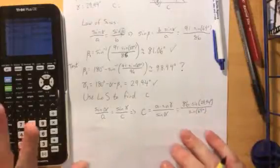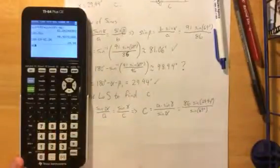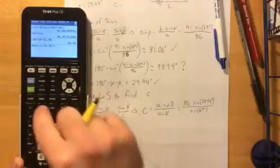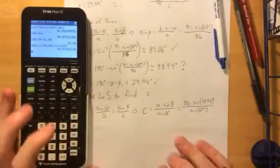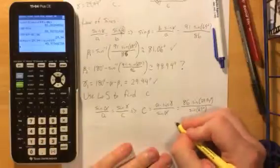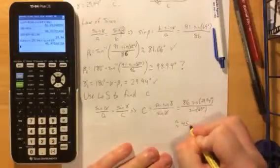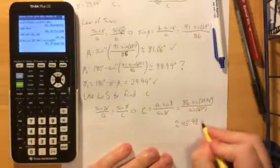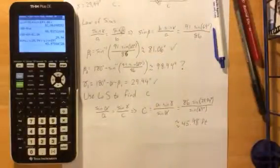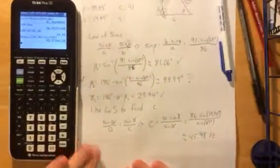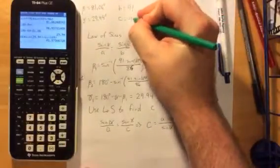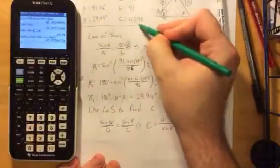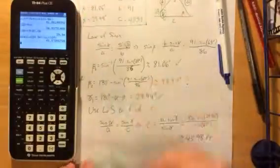At this point I can turn back to the graphing calculator and say hey, figure out that thing. 86 times the sine of 29.94 divided by the sine of 69 degrees. We'll round this off to two decimal places, just to be safe. We'll say that this is approximately 45.98. In the original problem it told us that everything was in feet, so we'll throw in feet here as well. So putting it all together, c we just said was equal to 45.98 feet.